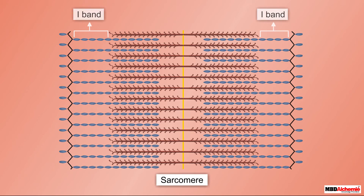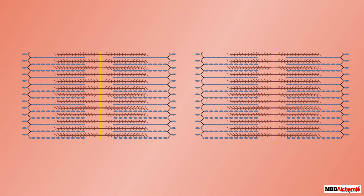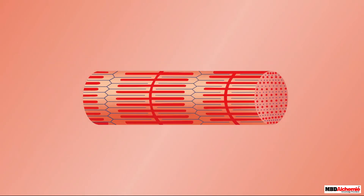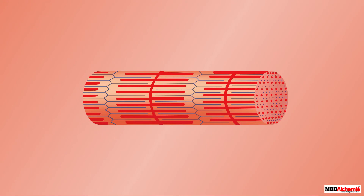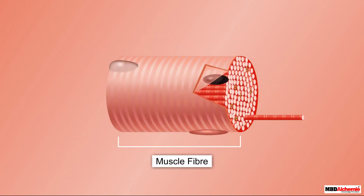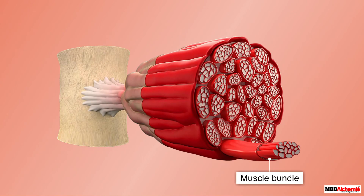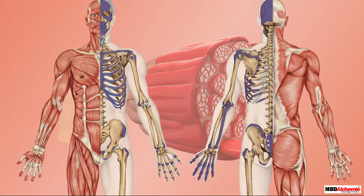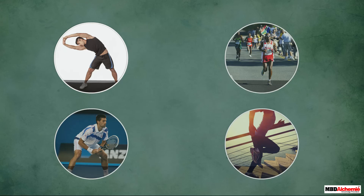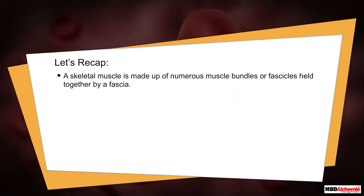So, alternately arranged A bands containing myosin and I bands containing actin make up the sarcomeres. The sarcomeres are serially arranged to form myofibrils, which are arranged in a parallel manner inside the muscle fiber. The muscle fibers in turn make up the muscle bundles, and the muscle bundles held together by a fascia make up the skeletal muscles, which help in various body movements.